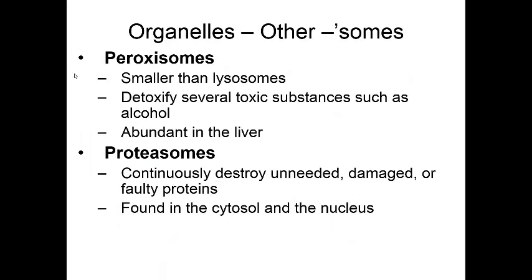Here are some more secretory vesicles. One is the site for chemical reactions — not breaking stuff down, but converting one thing into another, detoxifying. This is a detoxification center, abundant in our liver, and one of its jobs is to convert alcohol into blood sugar. The next secretory vesicle is a proteasome, very similar to a lysosome. However, a proteasome exclusively breaks down unnecessary damaged proteins.